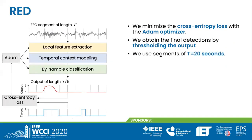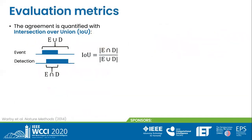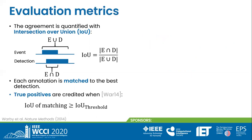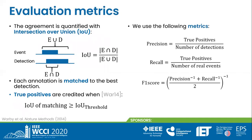This threshold is adjusted after training to maximize the F1 score. For all experiments, we use segments of 20 seconds. We quantify the agreement between detections and expert annotations using the intersection over union, or IOU for short, which is the ratio between the length of the intersection and the length of the union, with an ideal value of 1. First, we match each expert annotation to the detection that gives the highest IOU. After matching, true positives are created when the IOU is higher than a threshold. We adopt the commonly used threshold of 0.2, but other values are considered for analysis too. Using this definition of true positives, we use the metrics precision, recall, and F1 score, with an ideal value of 1.